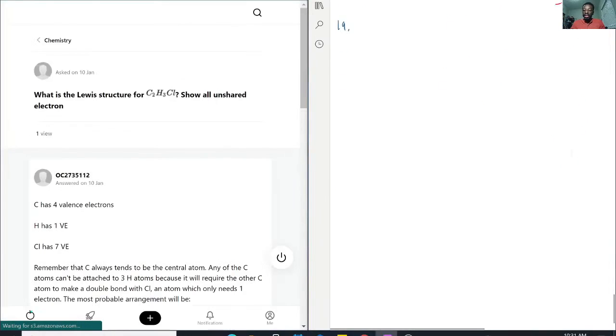What is the Lewis structure for C2H3Cl? Show all unshared electrons.